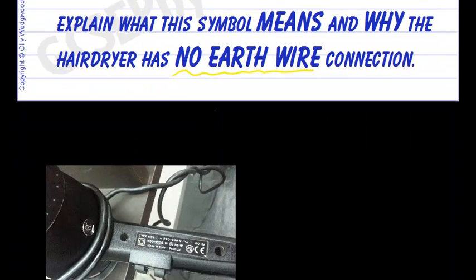Well, first of all, let's take a look at a hairdryer and you might be able to spot here the two squares symbol. And what that means is that the appliance is double insulated.